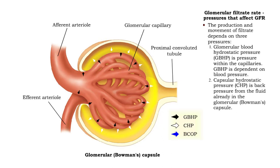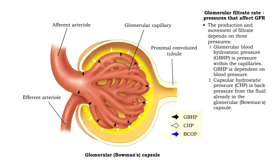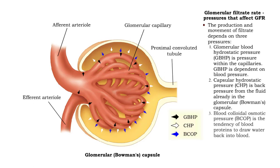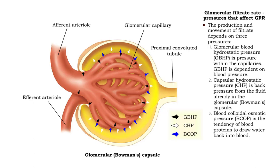Opposing glomerular blood hydrostatic pressure is capsular hydrostatic pressure, which is the back pressure exerted by fluid already in the Bowman's capsule. Also opposing glomerular blood hydrostatic pressure is blood colloidal osmotic pressure, which draws water back into the blood.